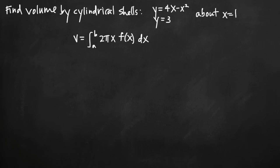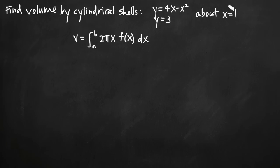Today we're going to be talking about how to find the volume by cylindrical shells. In this particular problem, we've been given two functions: y equals 4x minus x squared, and y equals 3. We've been asked to find the volume enclosed by these two curves when we rotate that region around the line x equals 1.